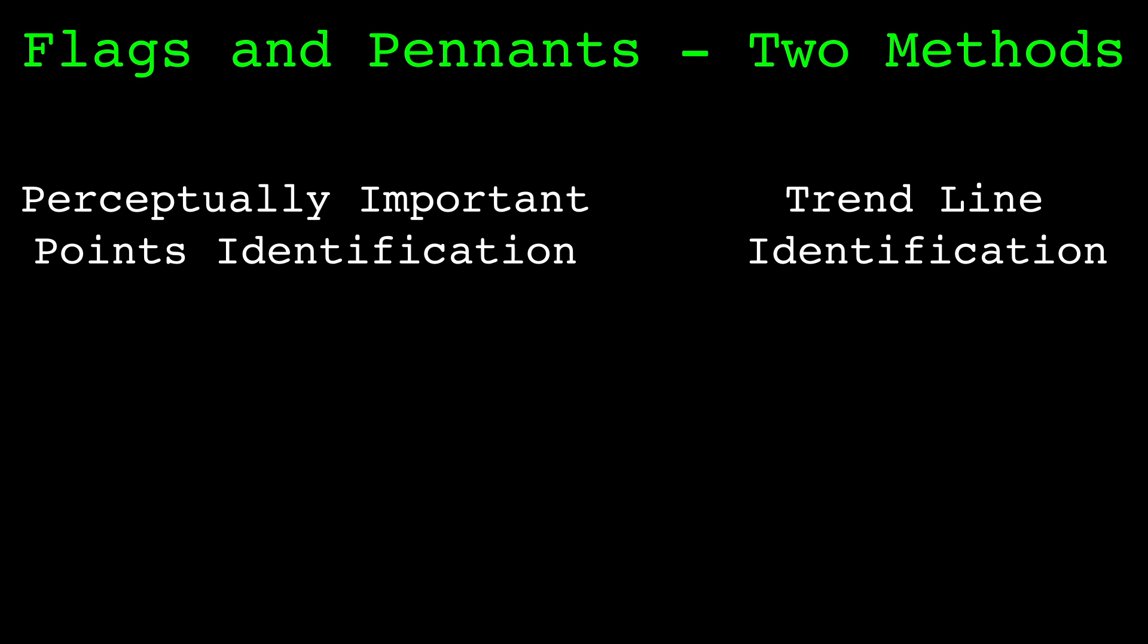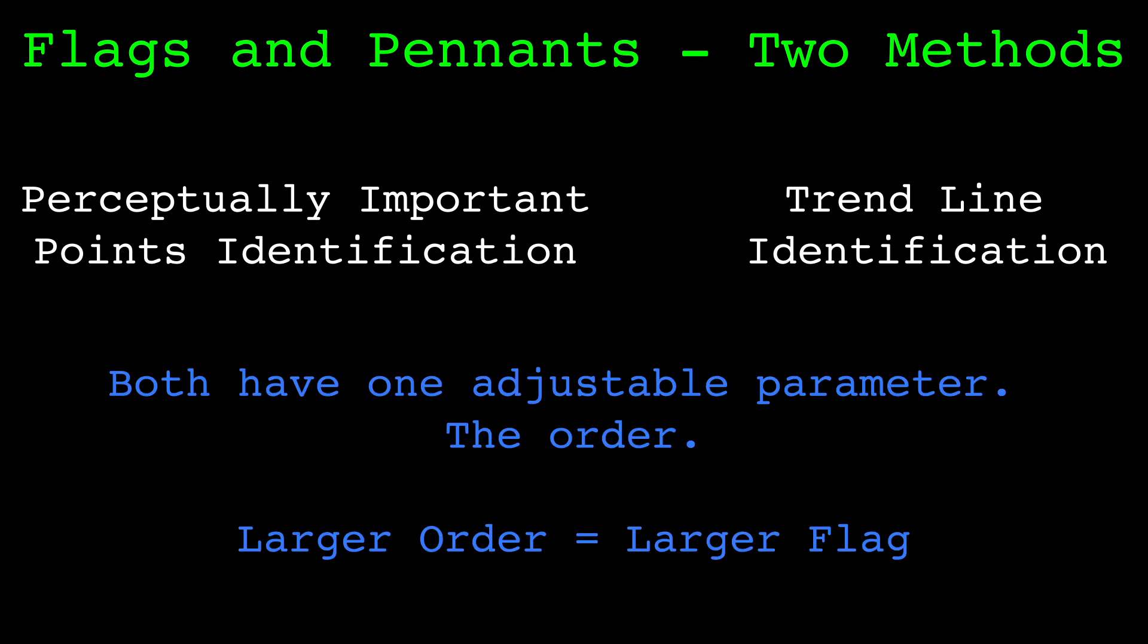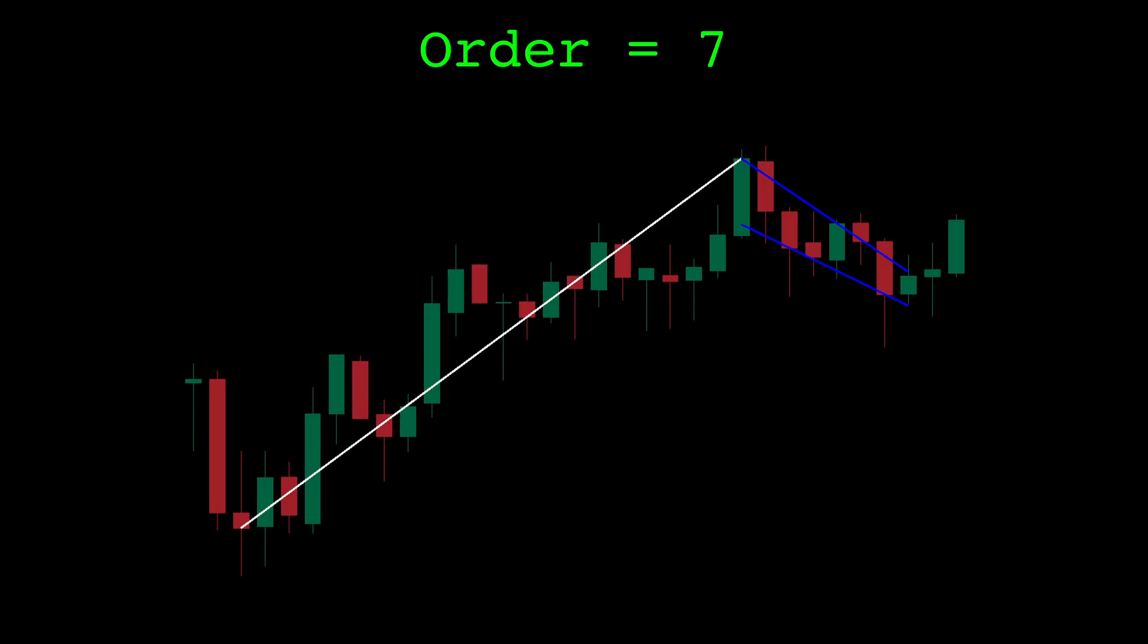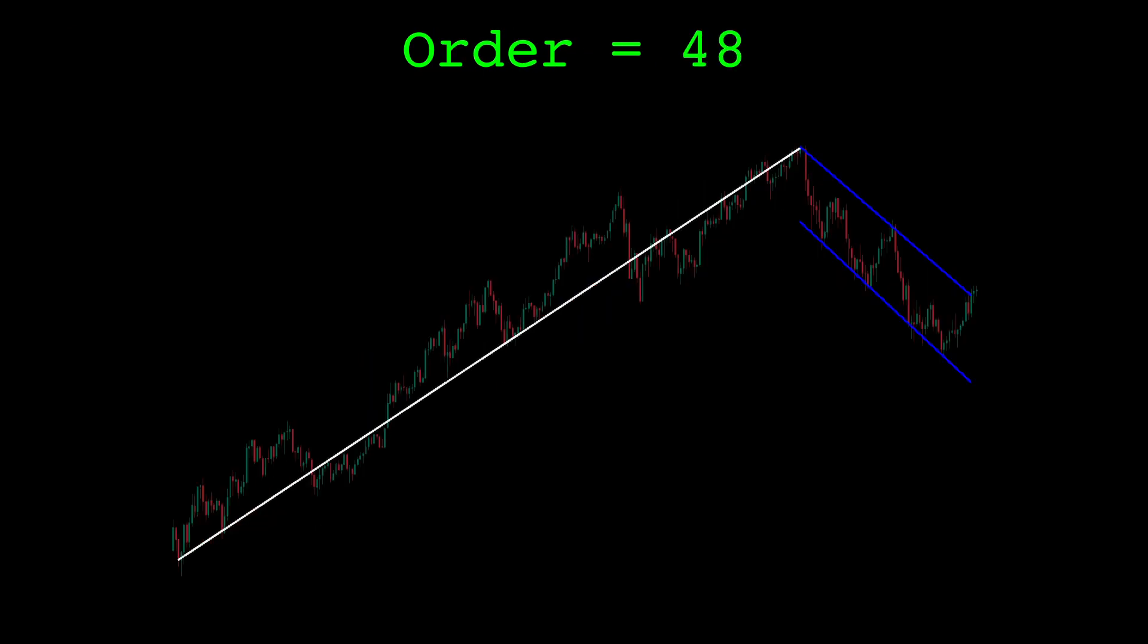I actually created two different identification methods. After going over the first version, I'll explain why I felt another was necessary. Anyways, both versions are controlled by a single adjustable parameter I call the order. The order controls the size of the patterns found. Here's a pattern found when the order parameter is 7, and here's a pattern when the order parameter is 48.